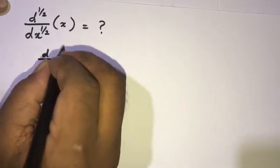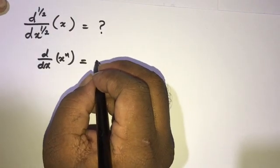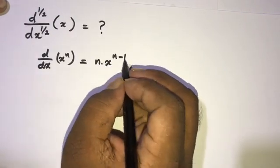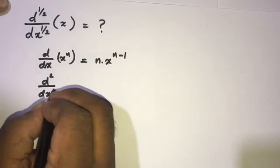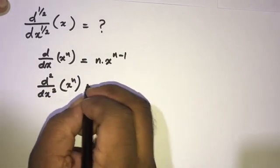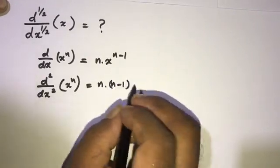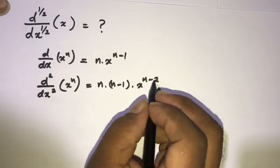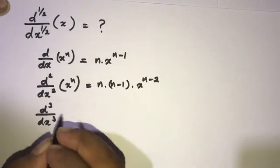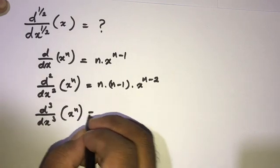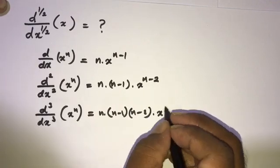Let's start. If we take the derivative of x to the n power, using the power rule of differentiation, this equals n times x to the n minus 1 power. Differentiating again with respect to x gives n times (n minus 1) times x to the n minus 2 power. Differentiating once more gives n times (n minus 1) times (n minus 2) times x to the n minus 3 power.